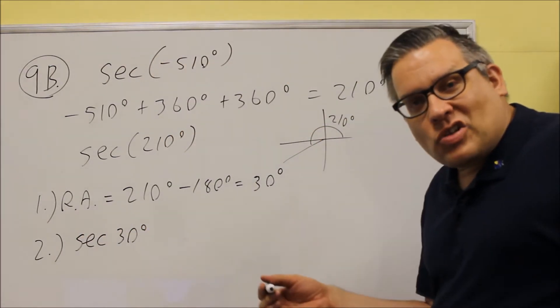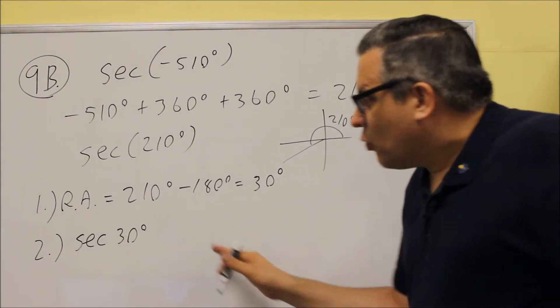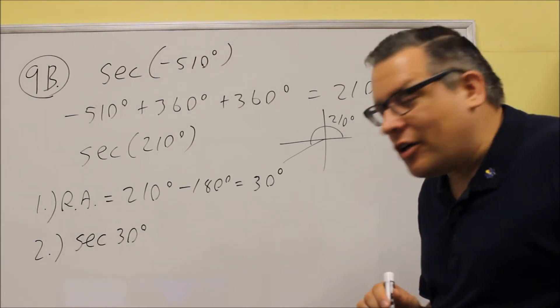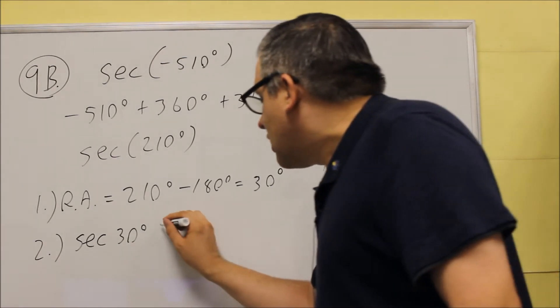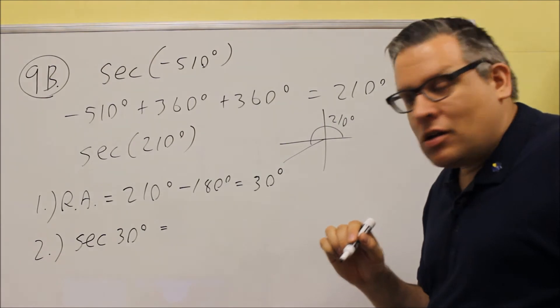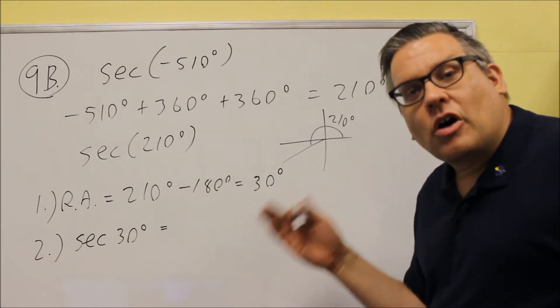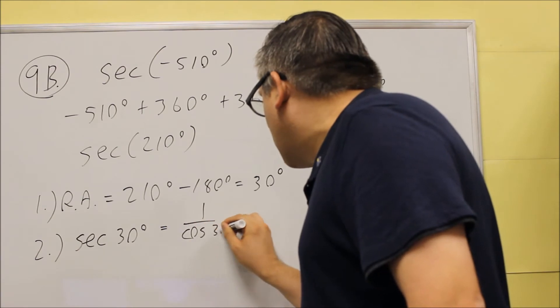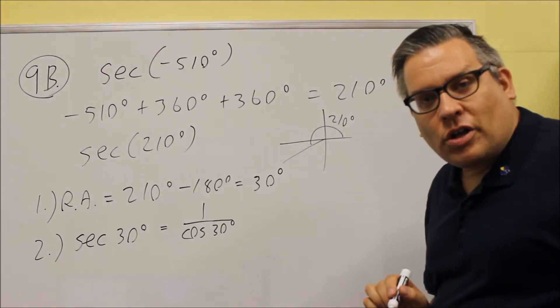Now, if you have a table that does not have secant on it or you're working with a unit circle, we need to have a cosine there instead of a secant so we can get the exact value. So I want to change the secant, and I'm going to use an identity for that. Secant is the reciprocal of cosine, so that means that secant 30 is the same thing as 1 over cosine 30.